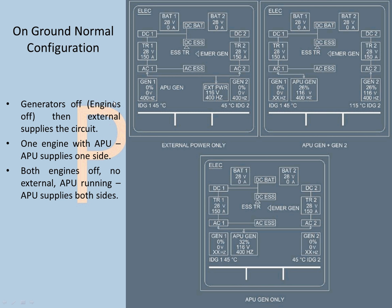On the ground: if engines are off but external power is connected, external power supplies both AC circuits — AC1 and AC2. If one engine is on and the APU is running, the APU supplies the opposite side to the running engine. If both engines are off with no external power but the APU is running, the APU supplies both sides. These are the three normal ground configurations.